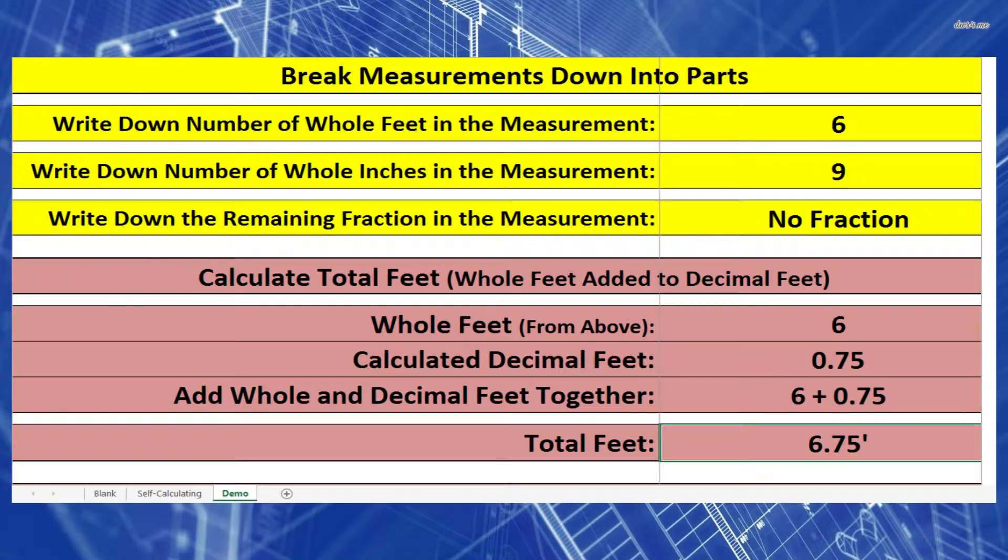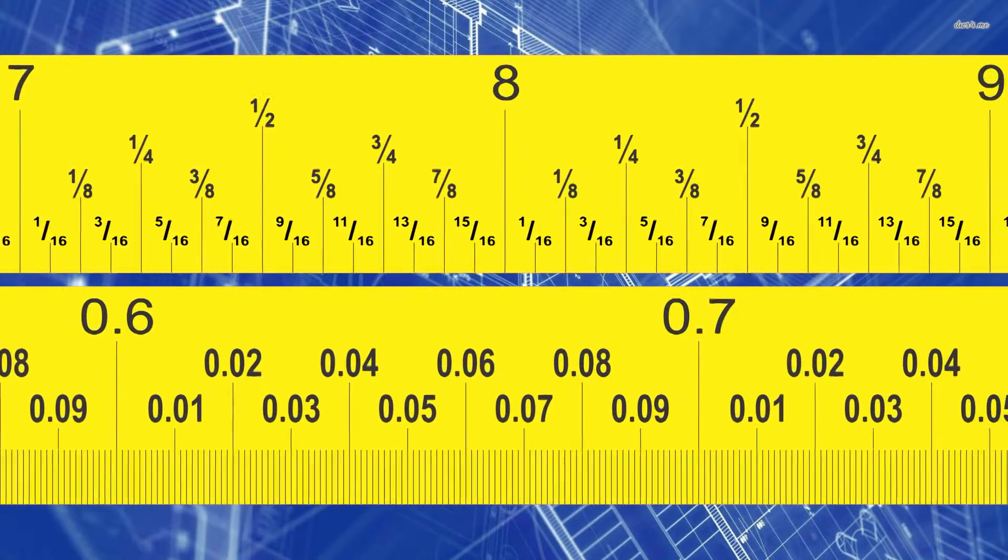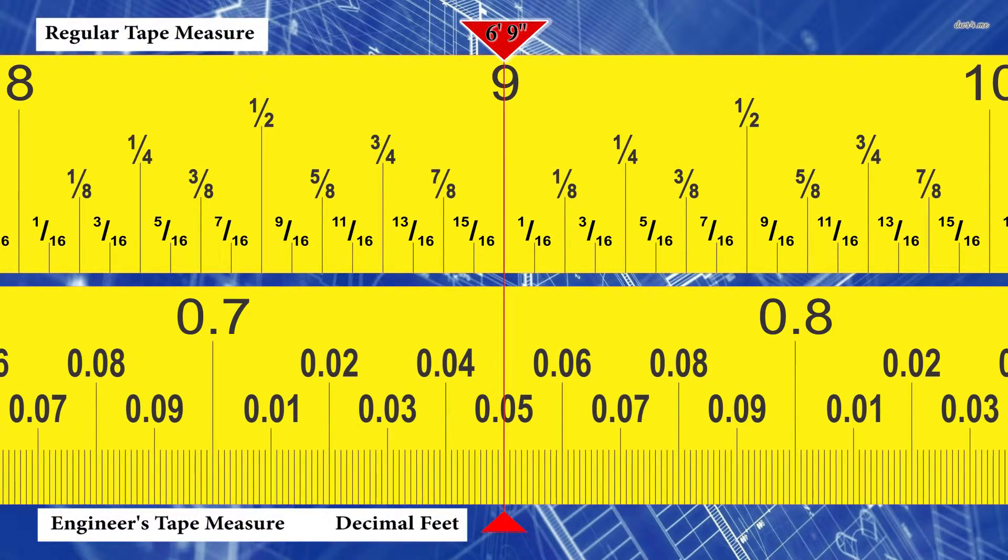Moving along, we're going to take our tape measures and check our answer. So on our regular tape measure, I'm going to make a line down from 6 foot 9 inches. I'm going to draw that right through my engineer's tape measure, that's the one with the decimal feet. And we should be able to see 6.75 feet on the decimal tape measure. Once again, we may need to pause the video to actually see that.